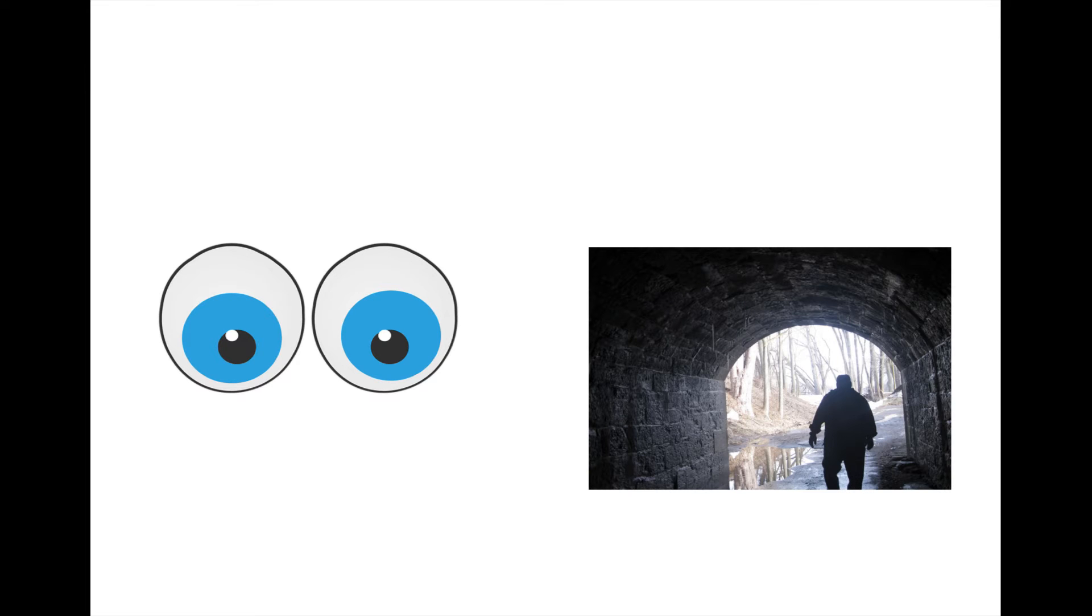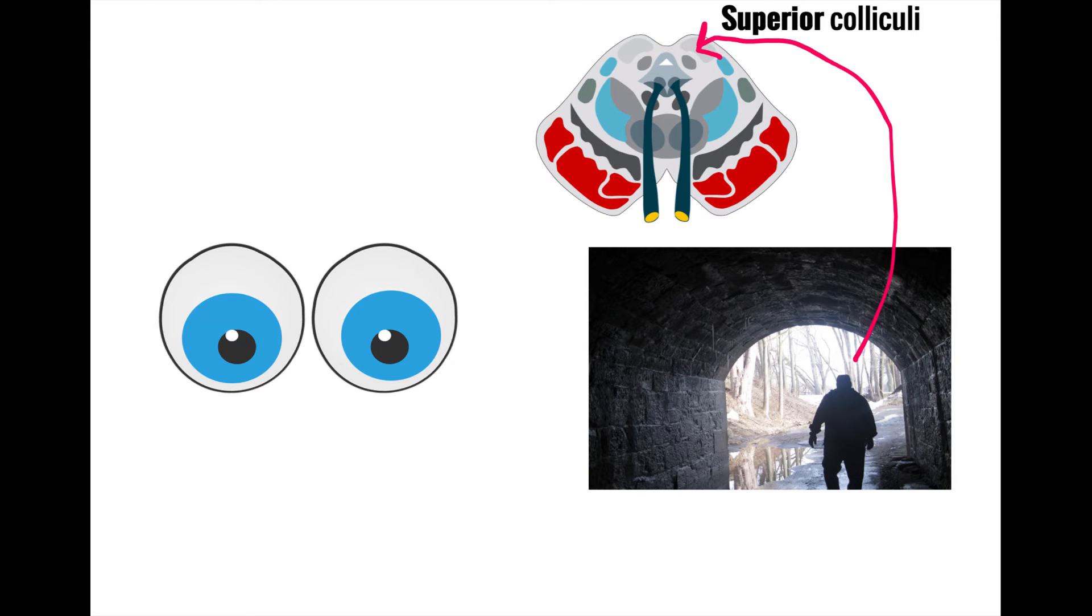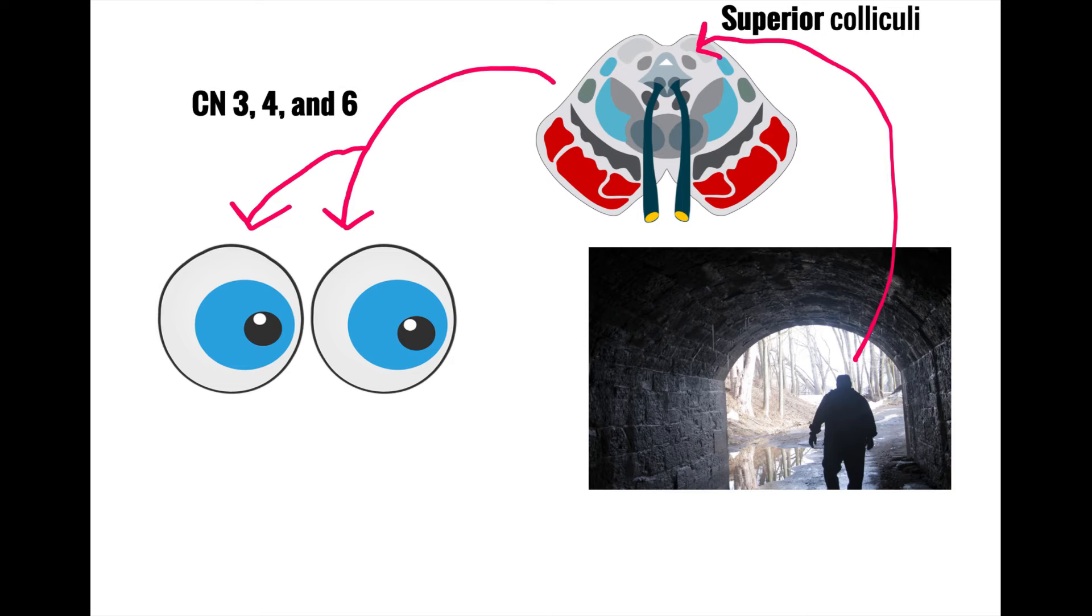For example, if you were to see a shadowy figure out of the corner of your eye, your superior colliculi will send signals to the oculomotor, trochlear, and abducens nerves, telling them to move your eyes in that direction. In this way, the superior colliculi play a key role in eye movement in response to visual information.